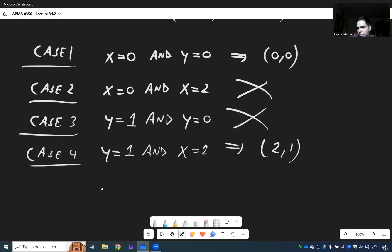And so the answer is, your two equilibrium solutions, or more precisely equilibrium points, 0, 0, and 2, 1.